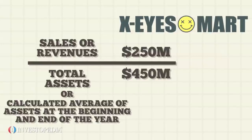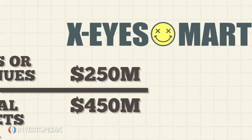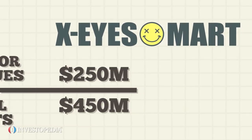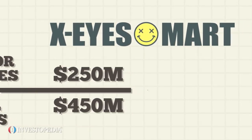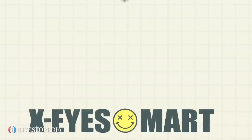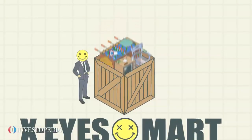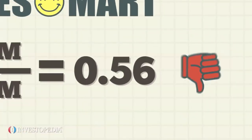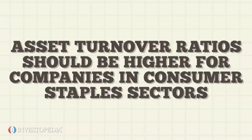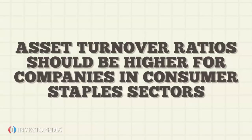Thus, the asset turnover ratio is 250 million dollars divided by 450 million dollars, which equals 0.56. Since Excise Mart is a big box retailer that sells clothing and household goods, its asset turnover of 0.56 is below the retail industry standard.